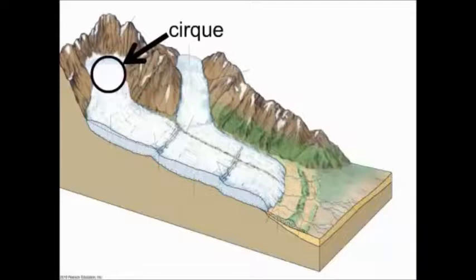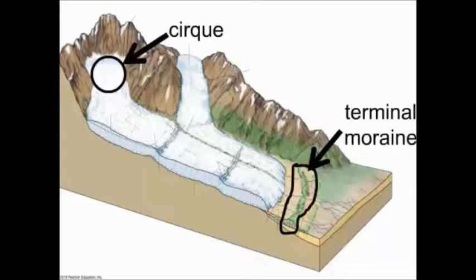Here's a schematic that shows some key landforms created during the process of glaciation. First, we have the cirque, found at the origins of the flowing glacier moving down the slope. At the end of this glacial flow, we have an end moraine. The end moraine produces a rugged feature that is virtually parallel to the end of the glacier — essentially perpendicular, or at a 90-degree angle, to the flow of the glacier.